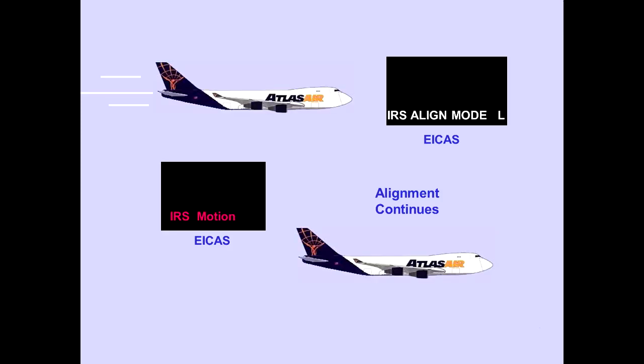The EICAS advisory message, IRS motion, is displayed when motion is detected during alignment. Alignment will continue 30 seconds after the airplane is stopped and complete in 8 to 10 minutes.